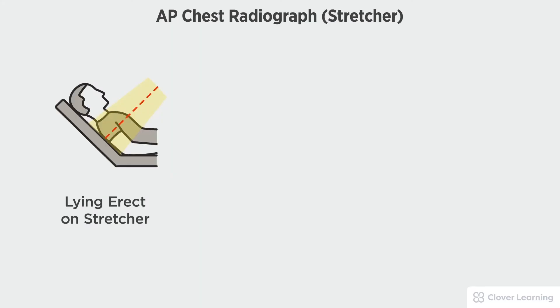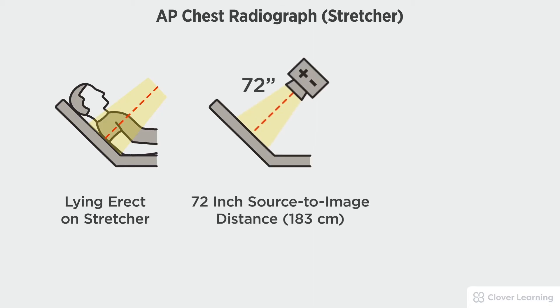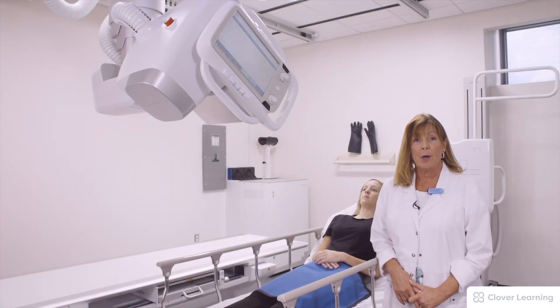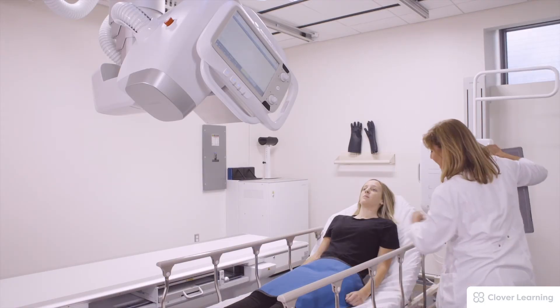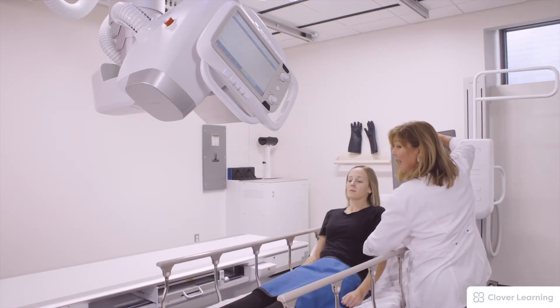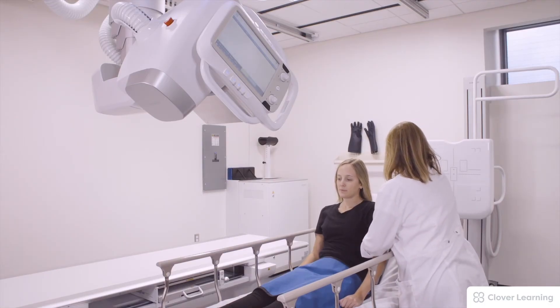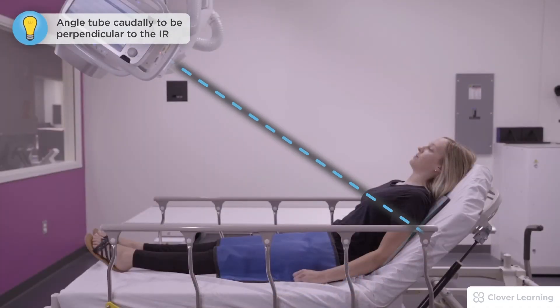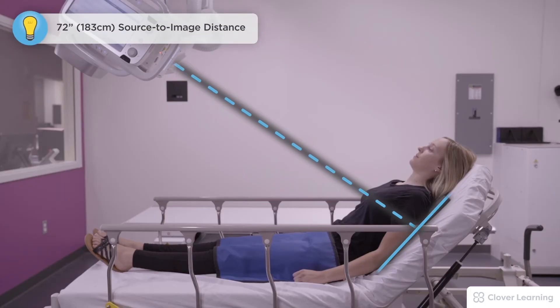In this view we will be demonstrating an AP chest with the patient semi-erect on a stretcher or a hospital bed. The head of the stretcher should be adjusted to place the patient's chest as erect as possible, with a 72-inch source to image distance and the tube angled caudally to match the angle of the image receptor. For an AP stretcher chest, our patient is unable to stand. I'm going to have my patient lean forward and I'll slide the IR down behind her. We bring the head of the stretcher up as much as the patient will allow, using a slight caudal angle so that we are perpendicular to the IR and to her sternum.